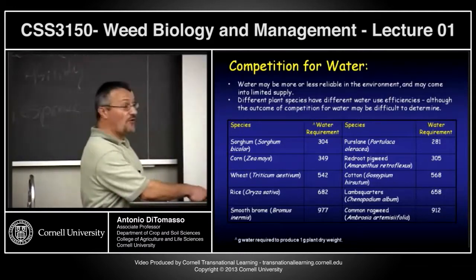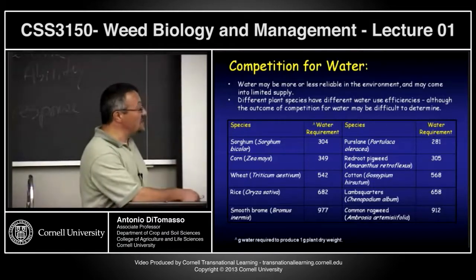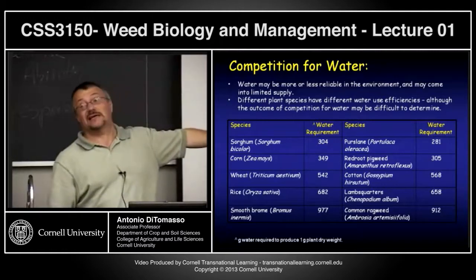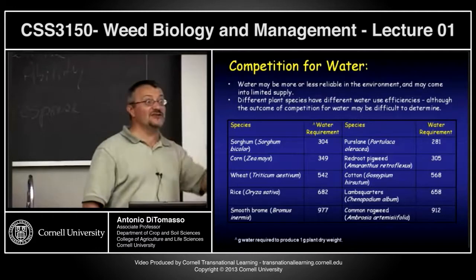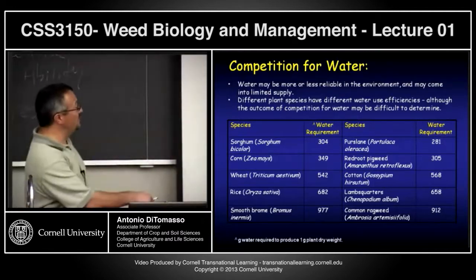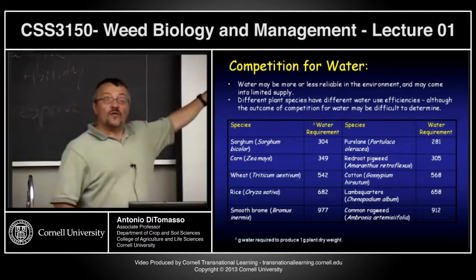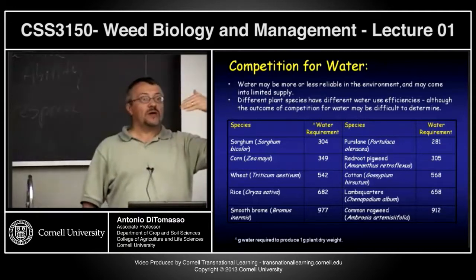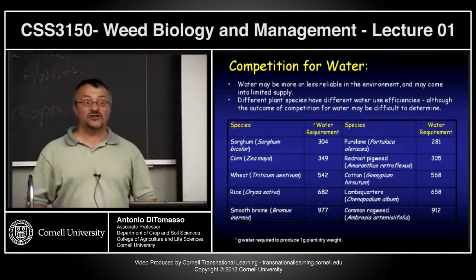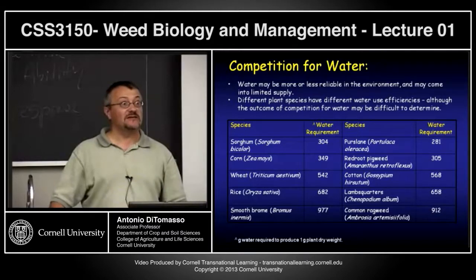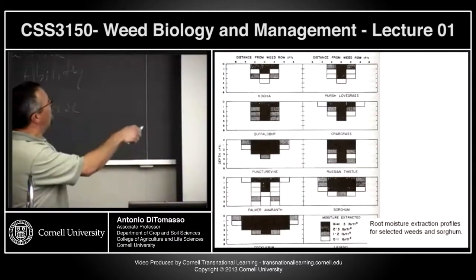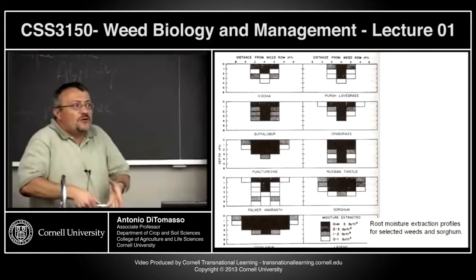The take-home message: not all weeds have the same water requirements or use water as efficiently. Giant or common ragweed in any of your crops is disastrous in terms of water competition. Different weed species compete in different ways. This figure shows root growth for weeds planted in rows — measuring how far laterally and how deep they extract soil moisture. Crabgrass can go five feet deep and extract heavily within two feet on each side.